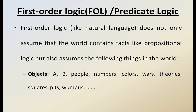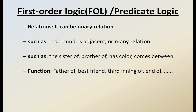First order logic not only assumes real world facts but also handles things like objects, people, numbers, colors, wars, theories, squares, fruits, and more — each and everything with certain objects and relationships. It also includes propositional logic and can be treated as an extension of it, also containing objects and sets of relationships.